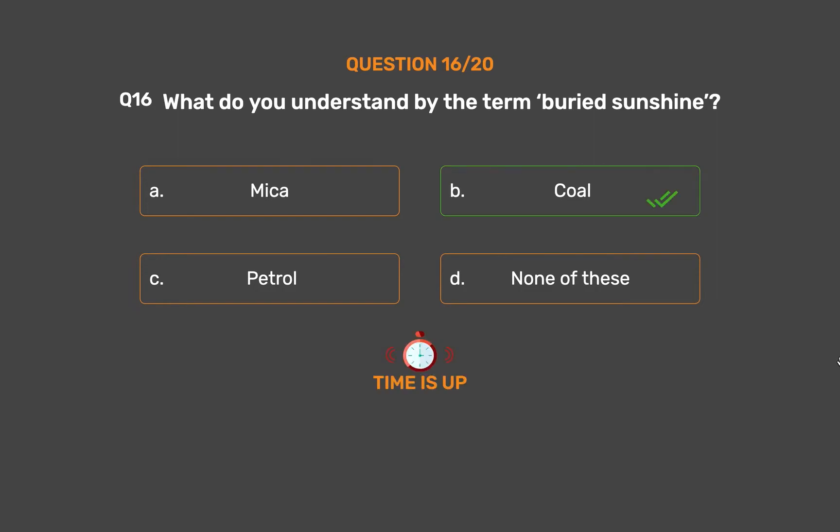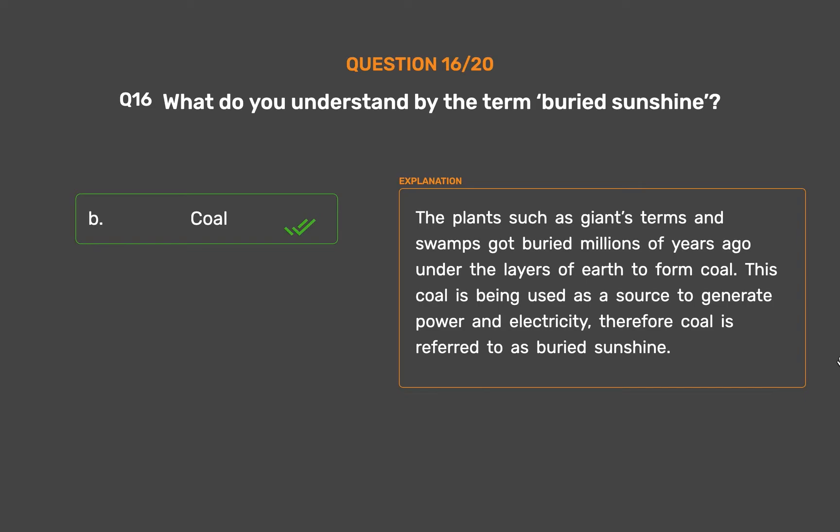The correct answer is Option B: Coal. Plants such as giant ferns and swamps got buried millions of years ago under layers of earth to form coal. This coal is used as a source to generate power and electricity, and therefore coal is referred to as buried sunshine.